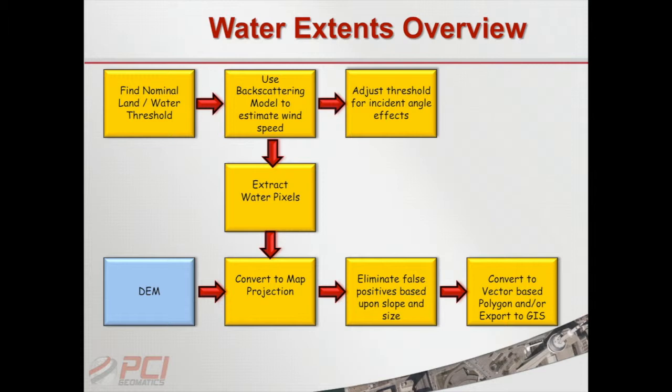In broad strokes, there are two major components. The first component is how do you establish what the threshold is going to be for water. As we all know, water is a specular reflector — the radar shoots out a pulse of energy, it hits the water, acts like a mirror, and all the energy bounces off. So the backscattering from water is going to be fairly low.